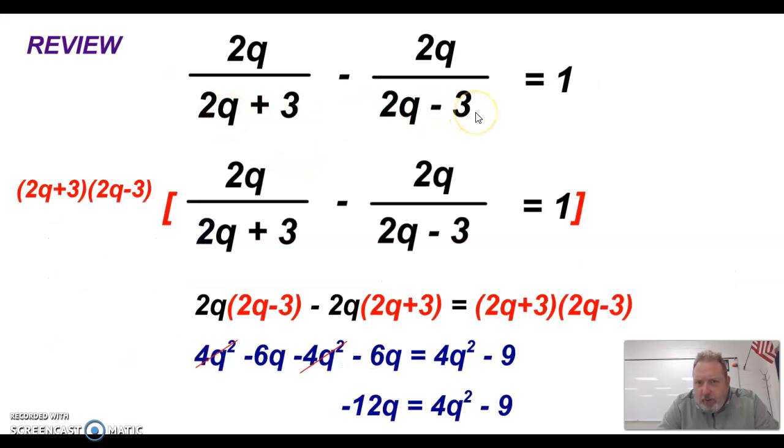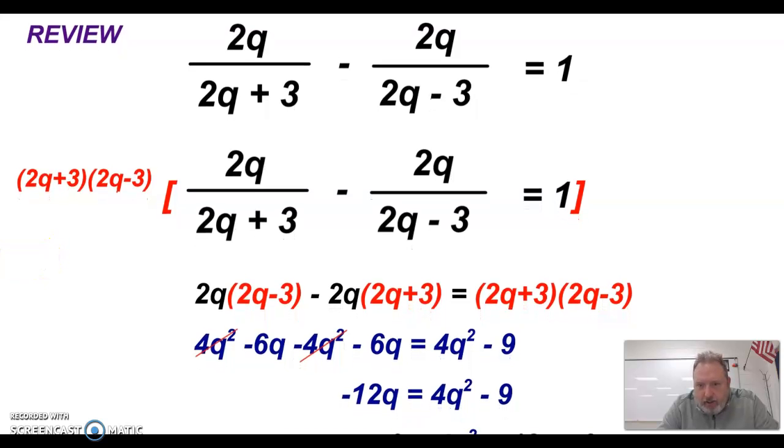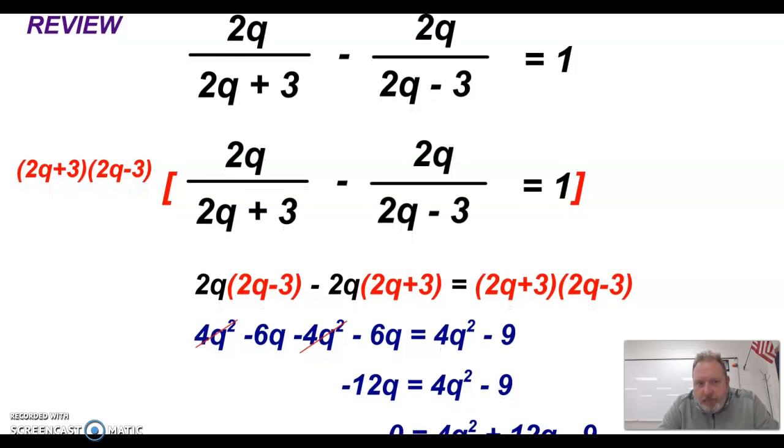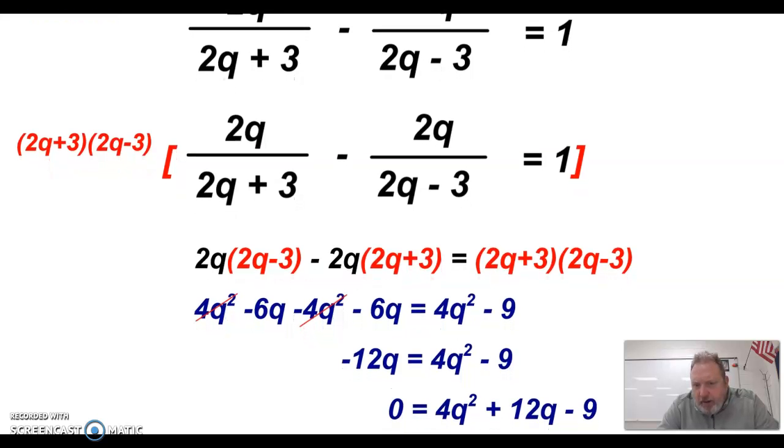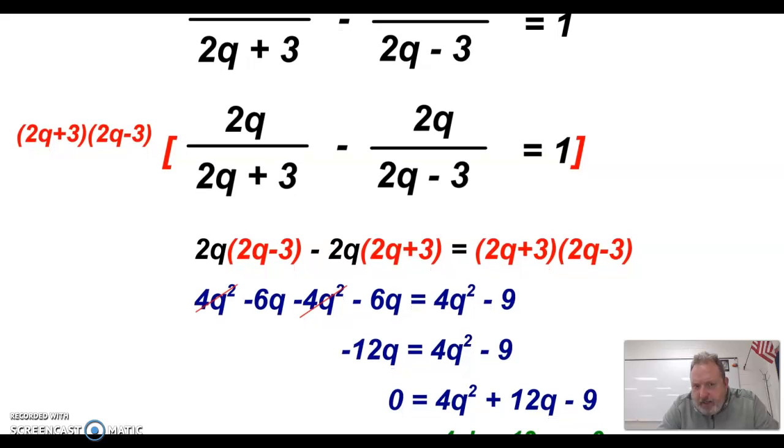So that was this rational equation. You can see here that we had two different polynomials, 2q plus 3, 2q minus 3 in our denominator. So our common denominator is going to be the product of those two, which is what you see right here. In order to eliminate our fractions, we are going to multiply the entire equation, each term, by that 2q plus 3, 2q minus 3. So that's the work that you see right here. So here, once we distribute and combine our like terms, we got down to a quadratic.